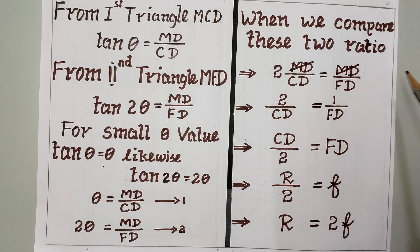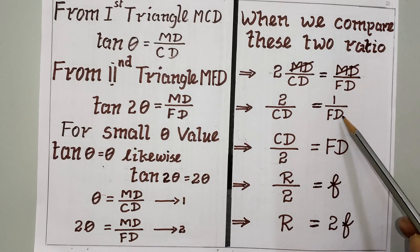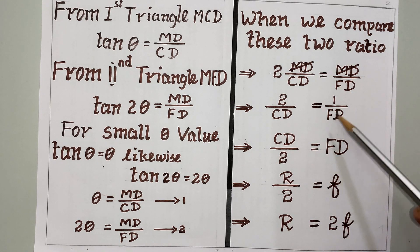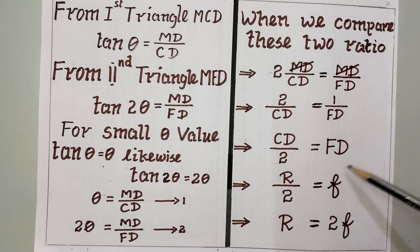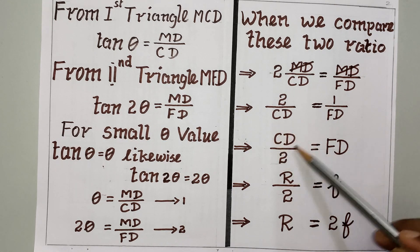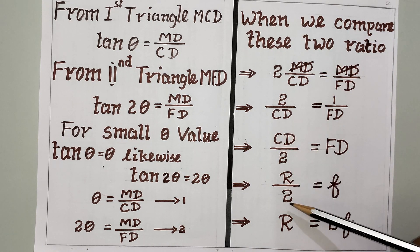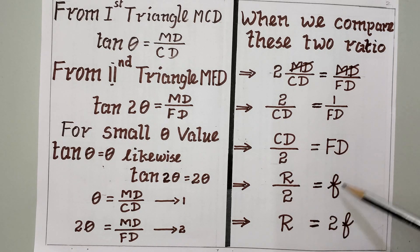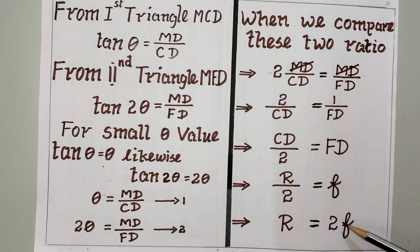MD cancels from both sides, leaving 2 / CD = 1 / FD, or equivalently CD / 2 = FD. Now, CD is nothing but R (radius of curvature) in our diagram, and FD is the focal length f. Therefore R = 2f — we have proved it.